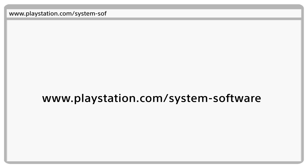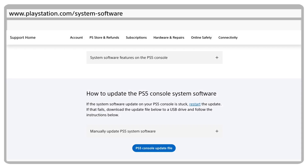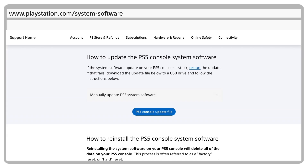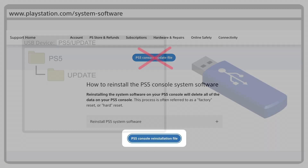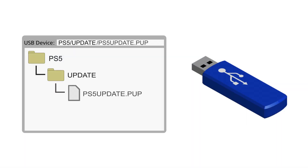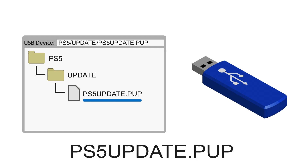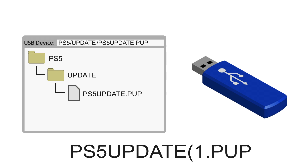Go to www.playstation.com/system-software on your computer's web browser. Scroll past the PS5 console update and download the PS5 console reinstallation file. Both files have the same name, so be sure to get the reinstallation version. Put the file inside the Update folder. Make sure the file name is PS5Update.PUP in all capital letters. If your computer adds extra numbers or characters to the file name, you should remove them.